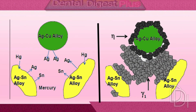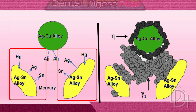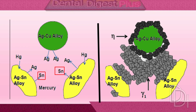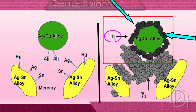Here in the picture you can see that when mercury reacts with an admixed powder, silver dissolves into the mercury from the silver-copper alloy particles, and both silver and tin dissolve into the mercury from the silver-tin alloy particles. The tin in solution diffuses to the surfaces of the silver-copper alloy particles and reacts with the copper to form the eta phase (Cu6Sn5). A layer of eta crystals forms around unconsumed silver-copper alloy particles.